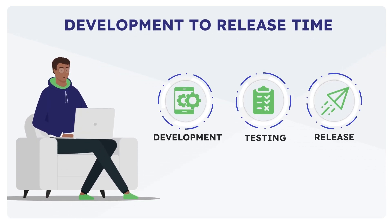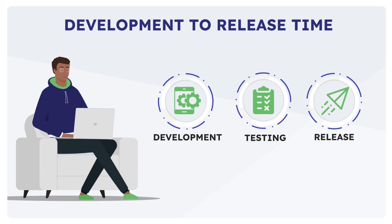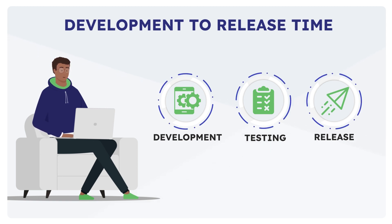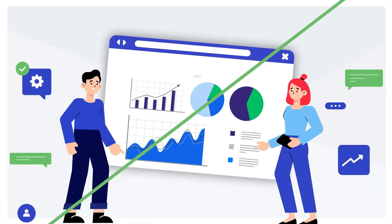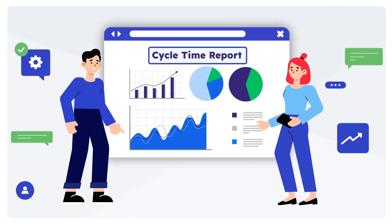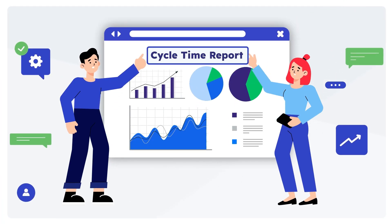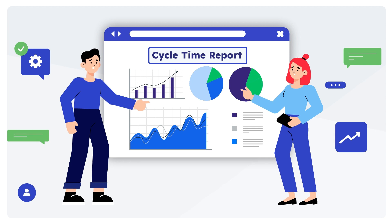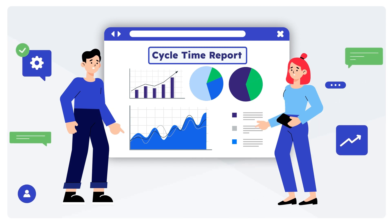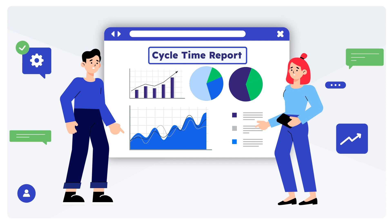Cycle time is the time taken from starting the software development to delivering that change to your customers. Longer cycle time may indicate inefficient release management processes. This one will be difficult to measure and you will likely need tools — in the case of JIRA, this KPI is available in the cycle time report.